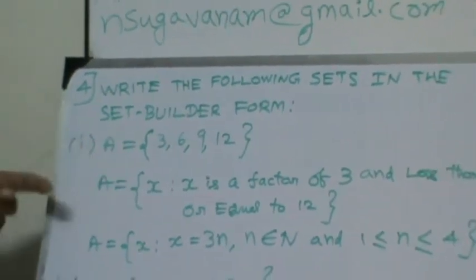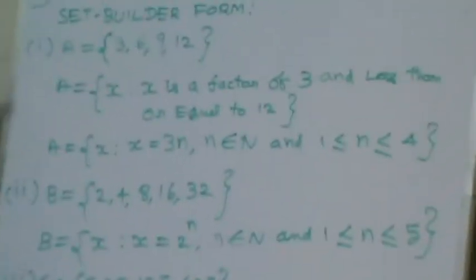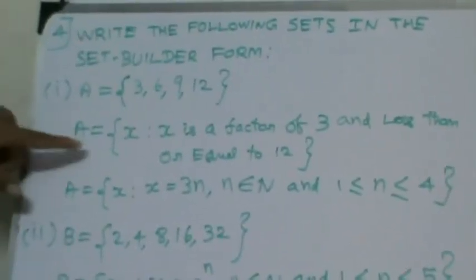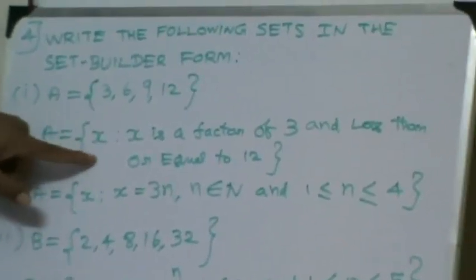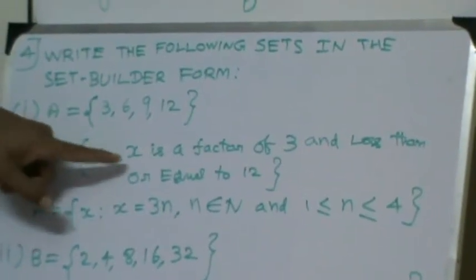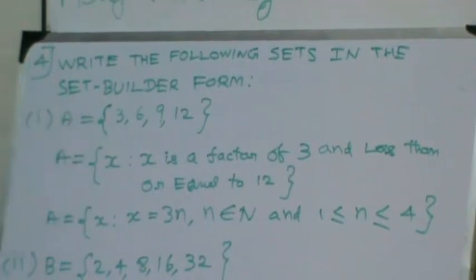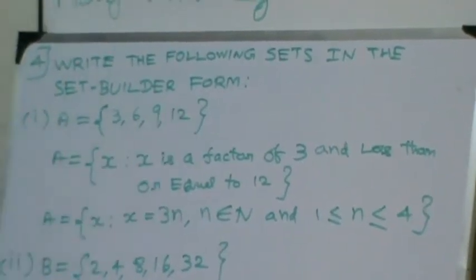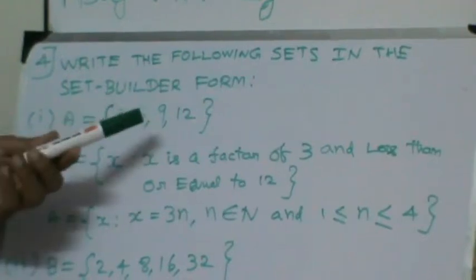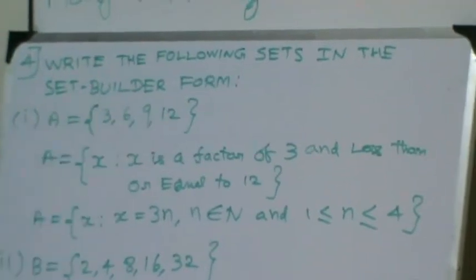So this we can write in a set builder form. We have written A is equal to set of all x such that x is a factor of 3. If you see each and every element, 3, 6, 9, 12, everything, it is a factor of 3. And it is less than or equal to 12.